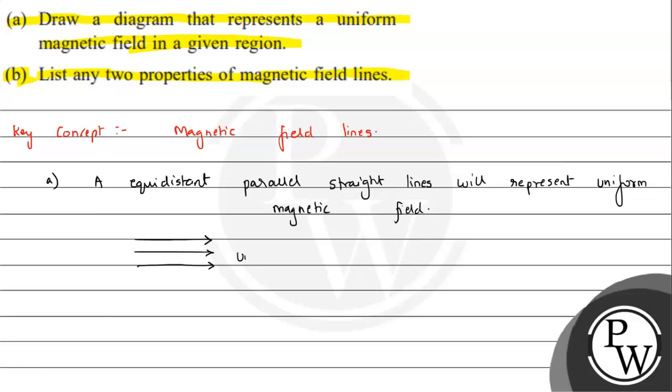This is a uniform magnetic field. This is a non-uniform magnetic field.